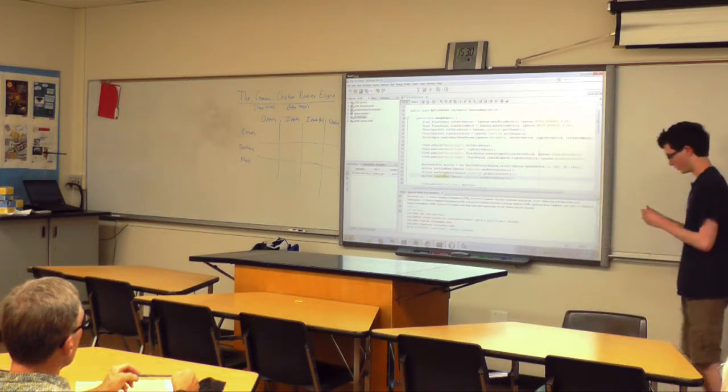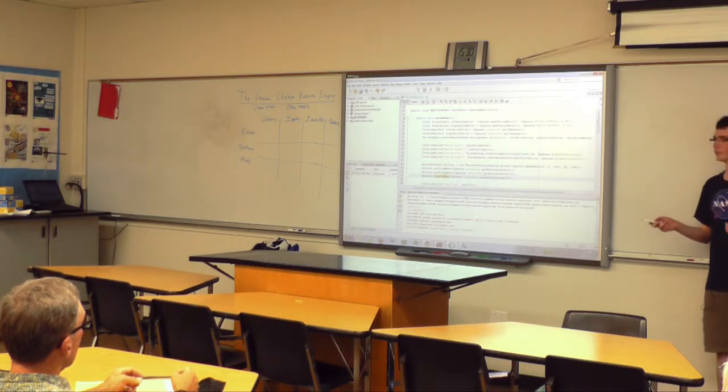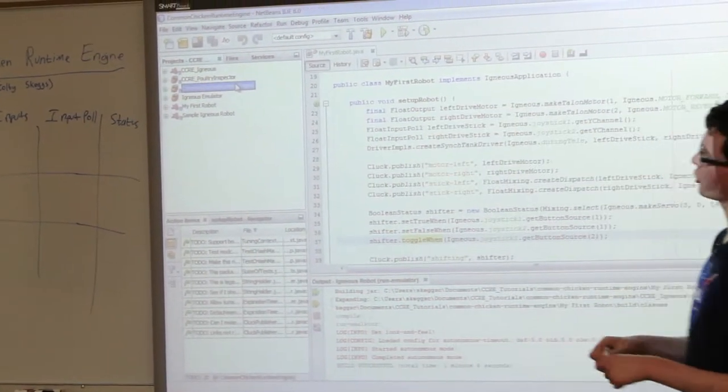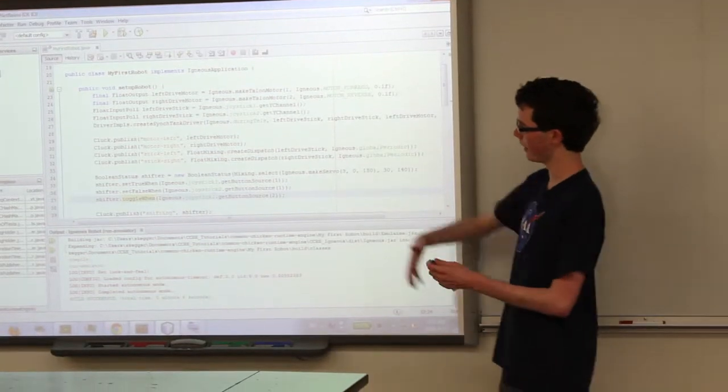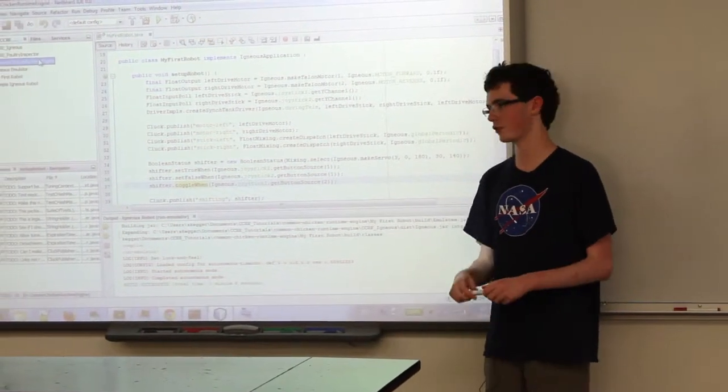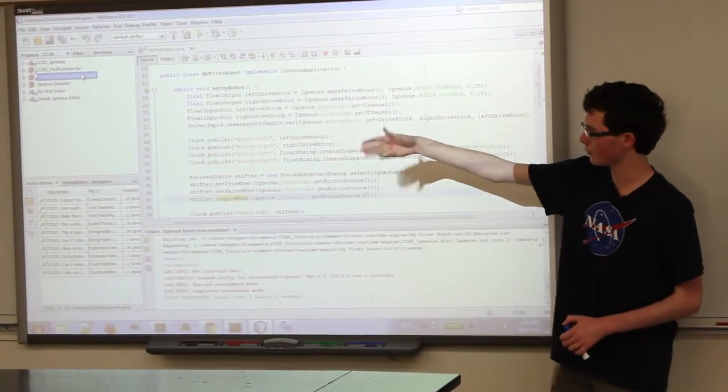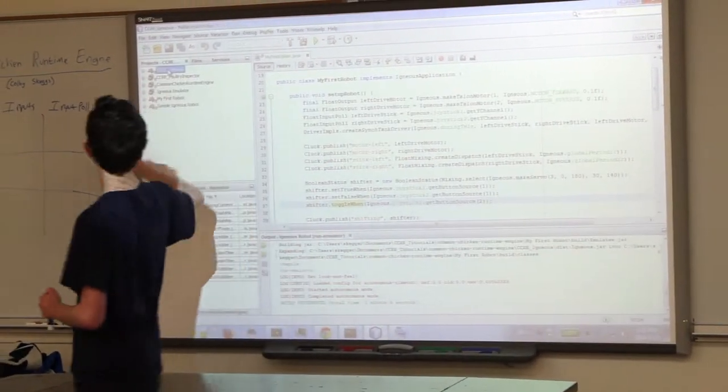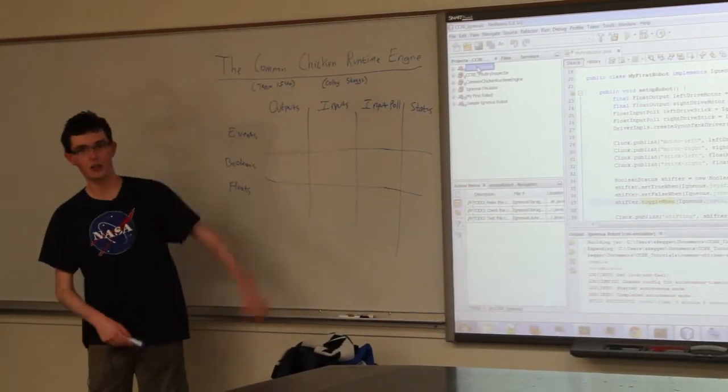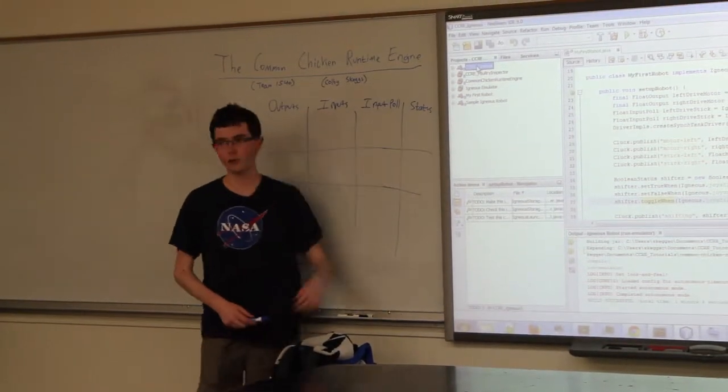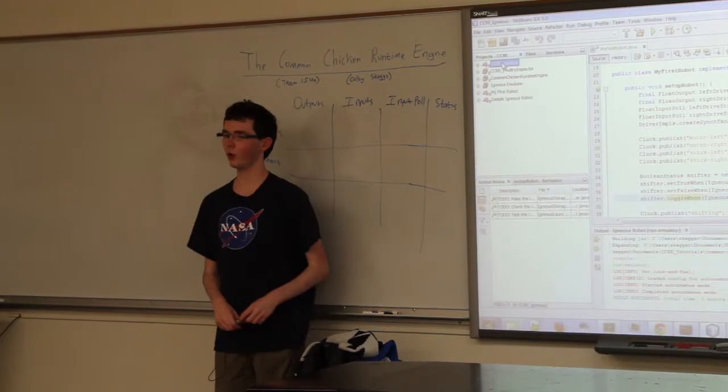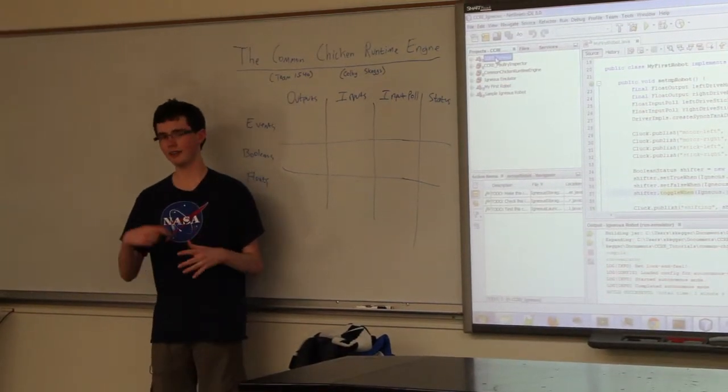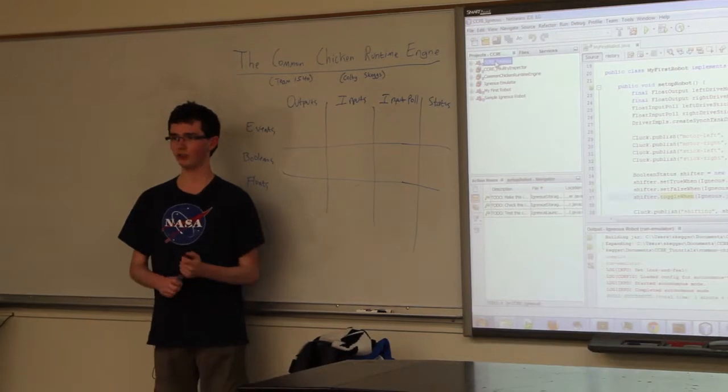One interesting part about the CCRE is that it's not actually limited to FRC robots. The main project is the common chicken runtime engine. This project is not FRC specific, but it contains all of the abstractions. Then we have the igneous project, which is FRC specific things. When we want to run an emulator, we just replace the igneous layer with the emulator layer. Our team also made the scumbot, which is a big aquatic Roomba effectively.